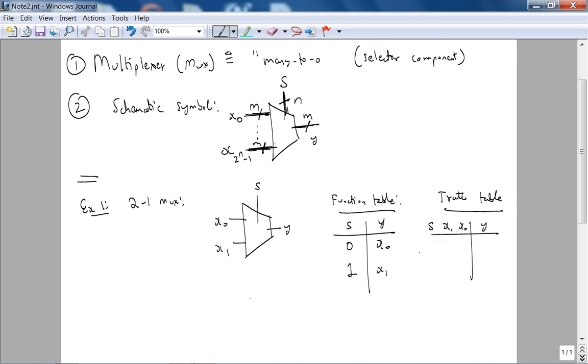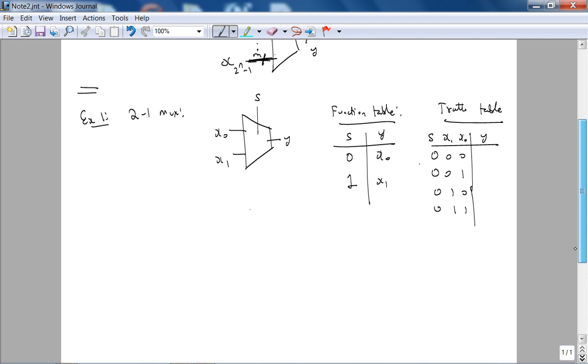Notice I've made select the most significant bit for obvious reasons, because in that case I can easily choose. If s is 0, I know the output is equal to x0. If s is 1, the output is equal to x1.